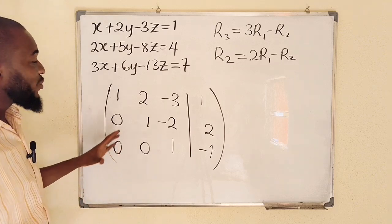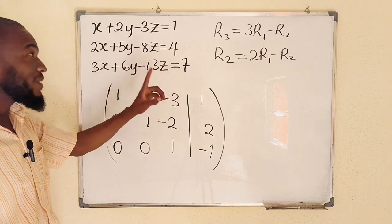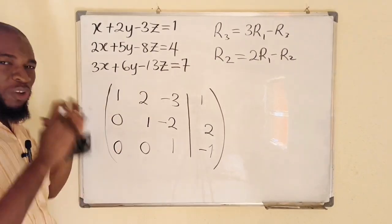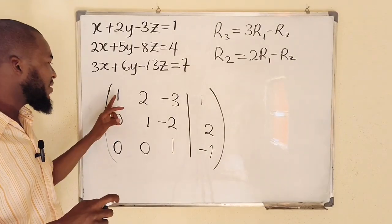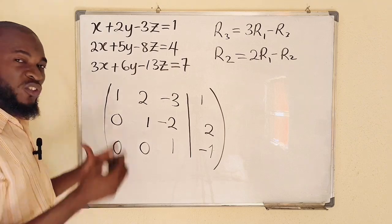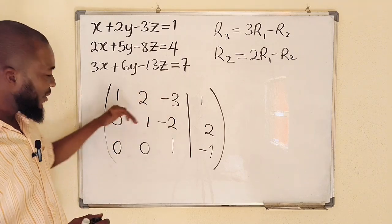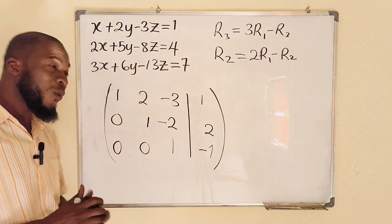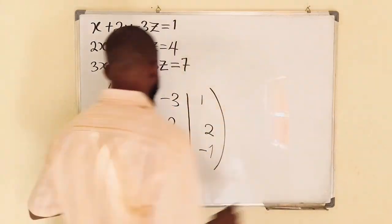In Gaussian elimination, what is most important is making the entries below the leading diagonal equal to zero — not necessarily making the upper entries zero. In Gauss-Jordan method, however, you must also make the entries above the leading diagonal equal to zero, keeping only the leading diagonal entries equal to 1. We are now going to form another system of equations.